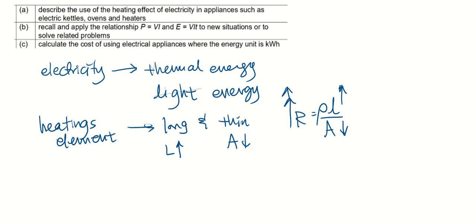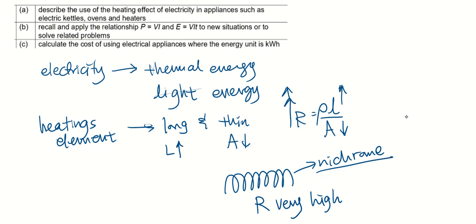You must be wondering why do I need resistance to be high. This is so that when the electrons pass through these high resistance elements, for example, let's say these are heating elements made up of nichrome. As you can see it has a very long length, very thin cross-sectional area, so the resistance of this nichrome wire will be very high.